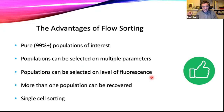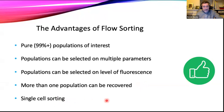We can also sort populations by level of fluorescence, which is something you can't really do with magnetic beads. For example, we could sort bright GFP from intermediate, low, or negative GFP. We can sort more than one population at once — pretty much every cell sorter on the market will allow us to do two populations; most will do four; some will do six at once. And importantly, we can do single cell sorting, which has become a major growth area for post-sort genomics, proteomics, or transcriptomics.